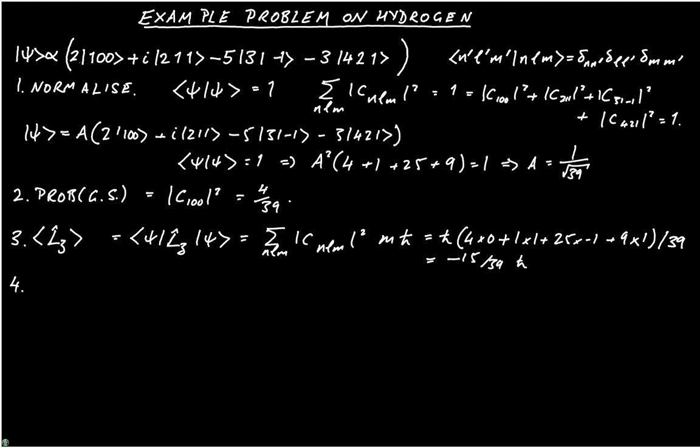Finally, we might ask ourselves the question, what's the probability of observing L equals 1? And in this case, that's going to be equal to the sum of the square moduli of the coefficients where L equals 1.